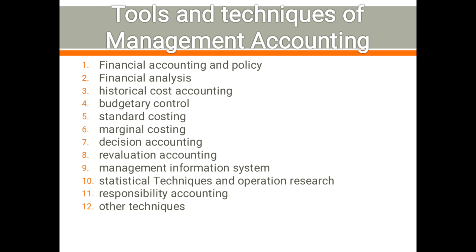The next tool is standard costing, which is an important technique of cost control. In standard costing, costs are predetermined on a scientific basis. Actual costs are compared with the standards, and any variance is analyzed to find the causes of variations, then action is taken for the removal of unfavorable variance. Under marginal costing, cost is divided into fixed and variable cost, and variable costs are used for decision making.